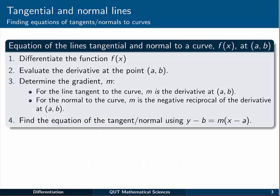The process is very similar for both, and it's summarized here in this four step process. The equations of the lines tangential and normal to a curve, given by f(x), at the point (a, b), can be found as follows.